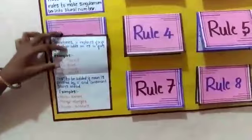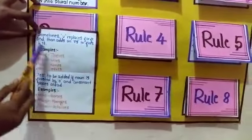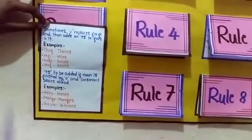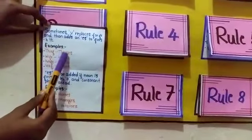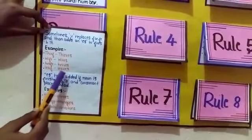Sixth rule: sometimes V replaces F or FE and then adds ES to finish it. Examples: thief-thieves, wife-wives, knife-knives, leaf-leaves.